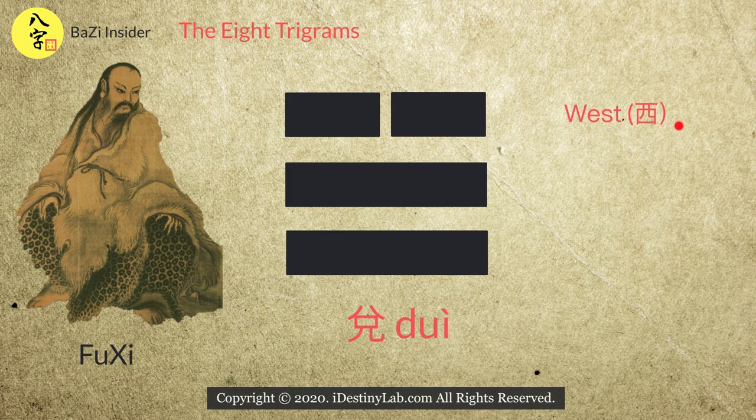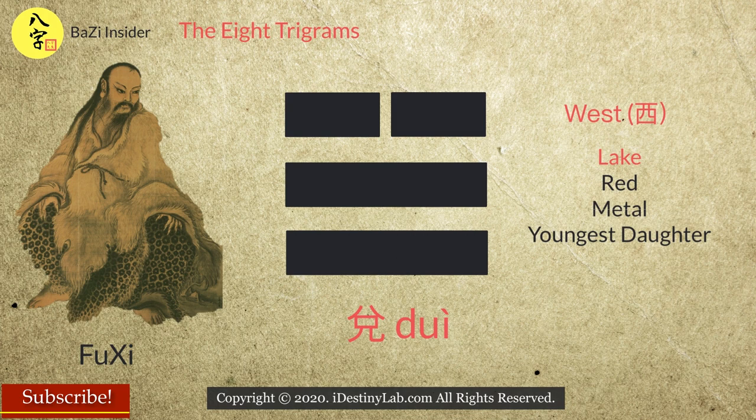The next Gua represents the west direction. It also represents the lake, red colour, and the youngest daughter. Its 5 elements is metal.